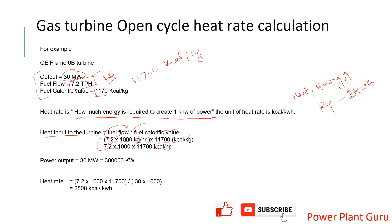The output from the meter is 30 megawatts. Converting to kilowatts: 30 × 1000 = 30,000 kW. The heat rate is heat input divided by power output: (7,200 × 11,700) ÷ (30 × 1000), which comes to close to 2,808 kilocalories per kWh.